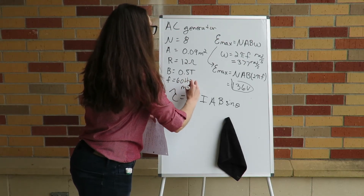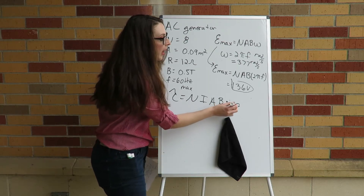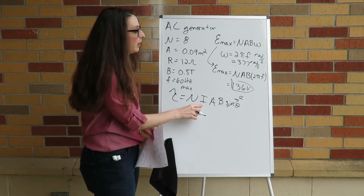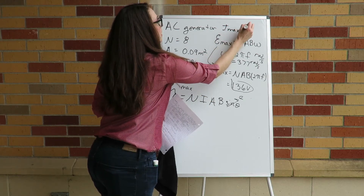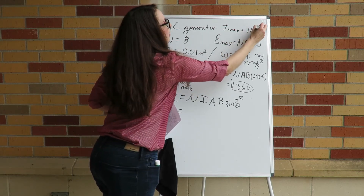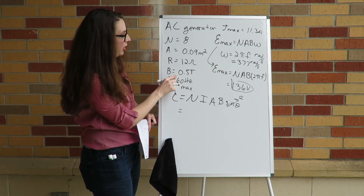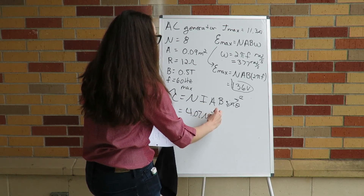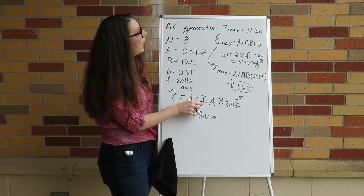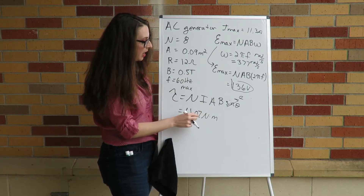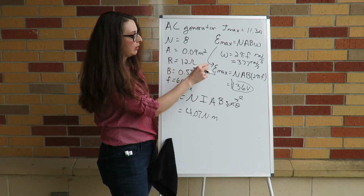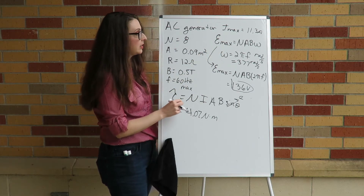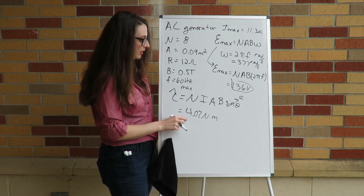For the maximum torque, sine theta equals 1. So the maximum torque required is N times the maximum current times the area times the magnetic field: 8 times 11.3 amperes times 0.09 meters squared times 0.5 tesla. That gives us 4.07 newton-meters — that's the torque required to keep spinning and maintain the same EMF and current output.